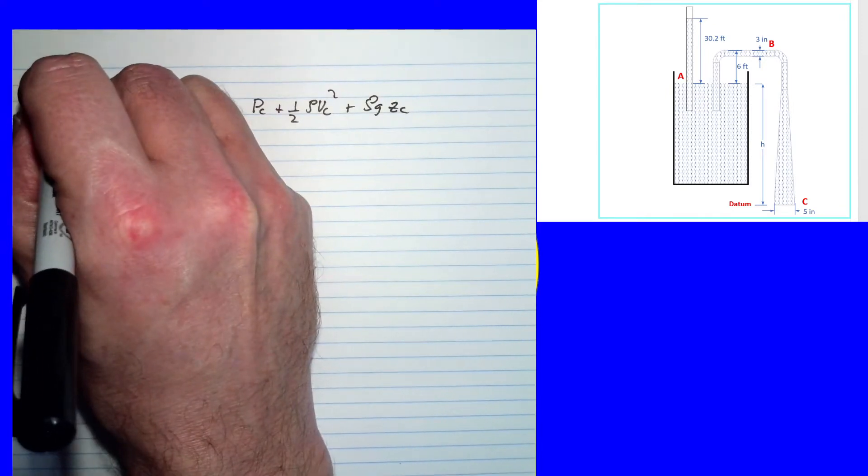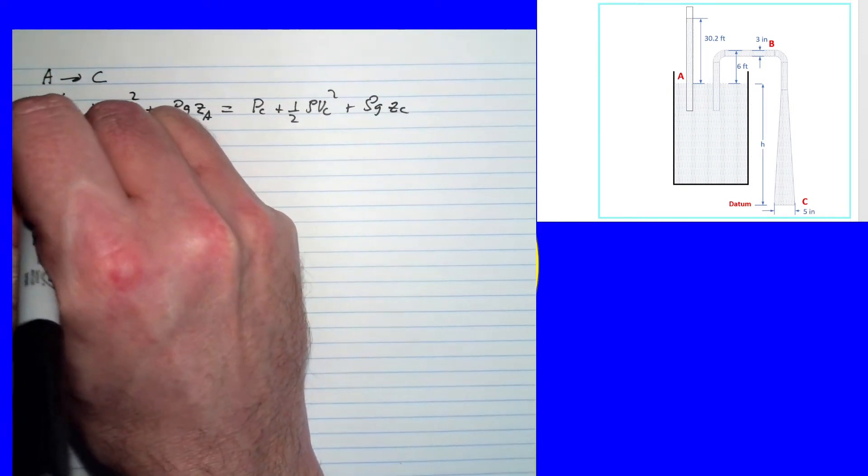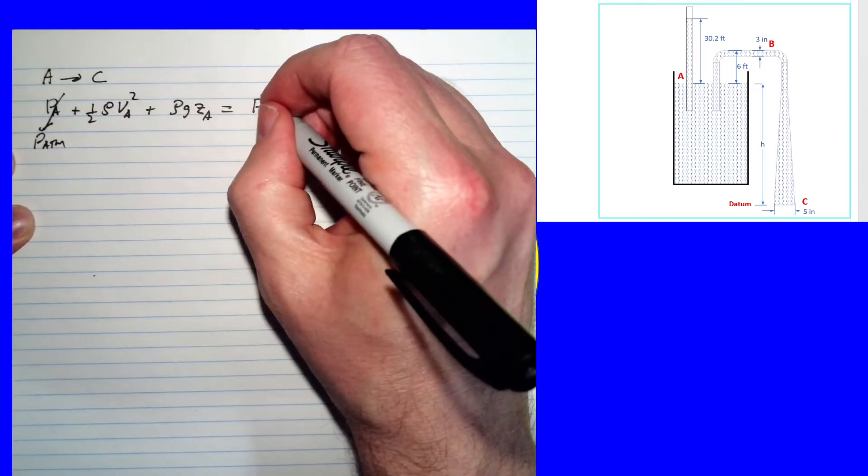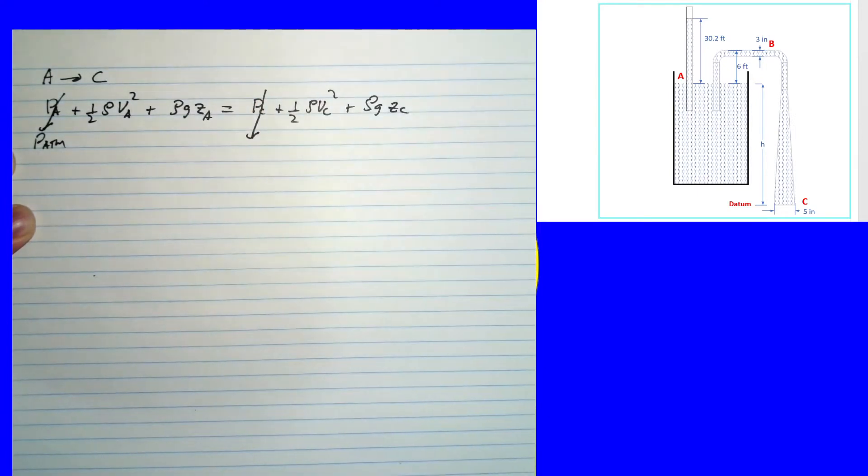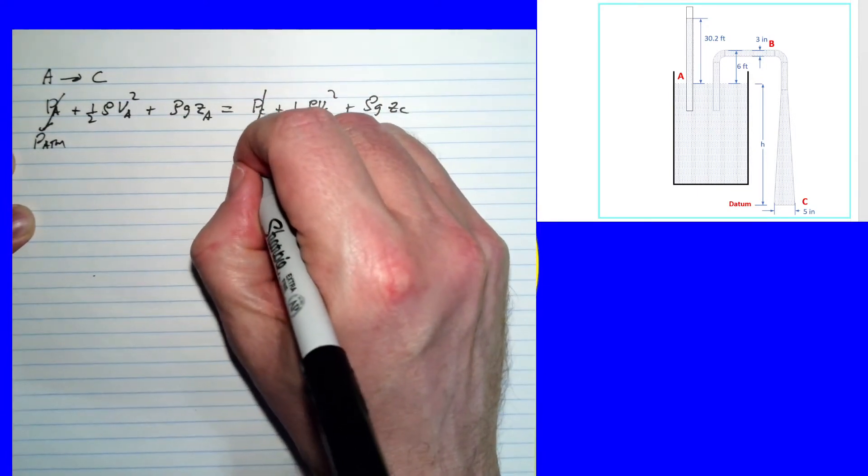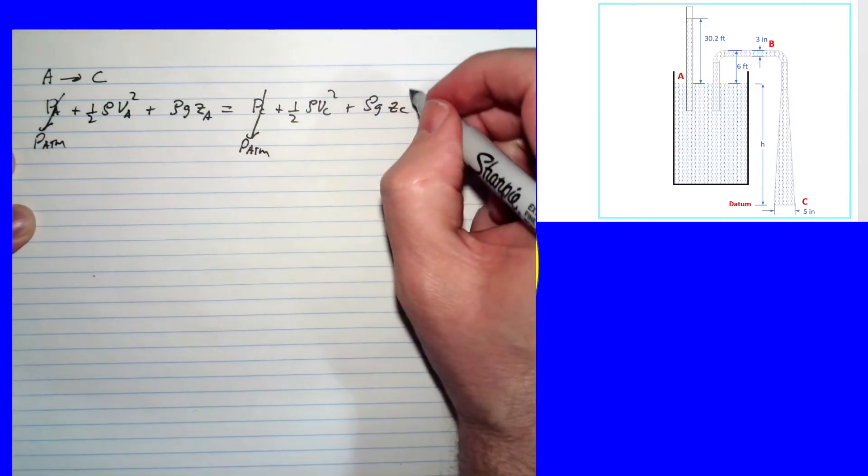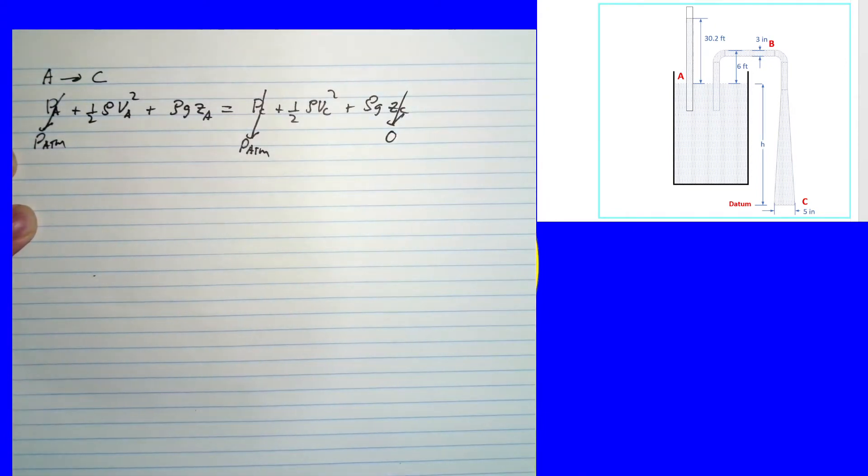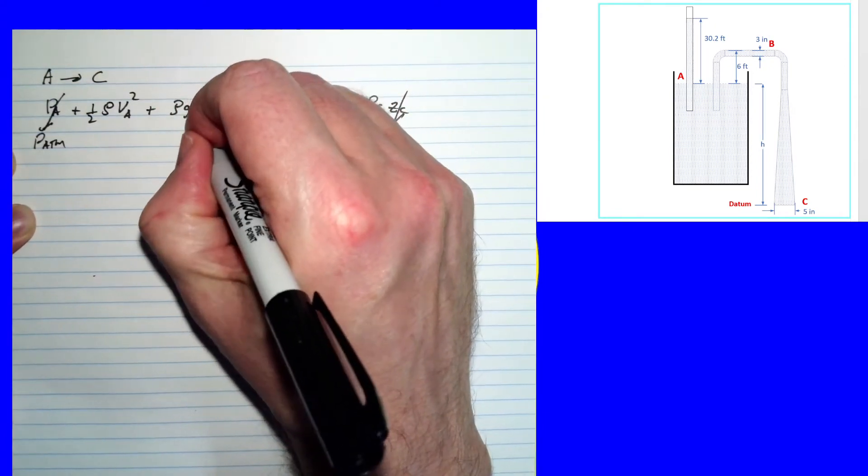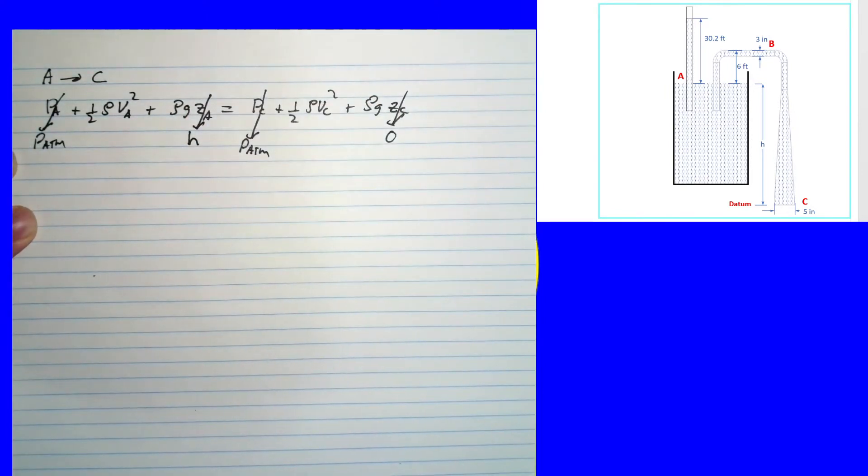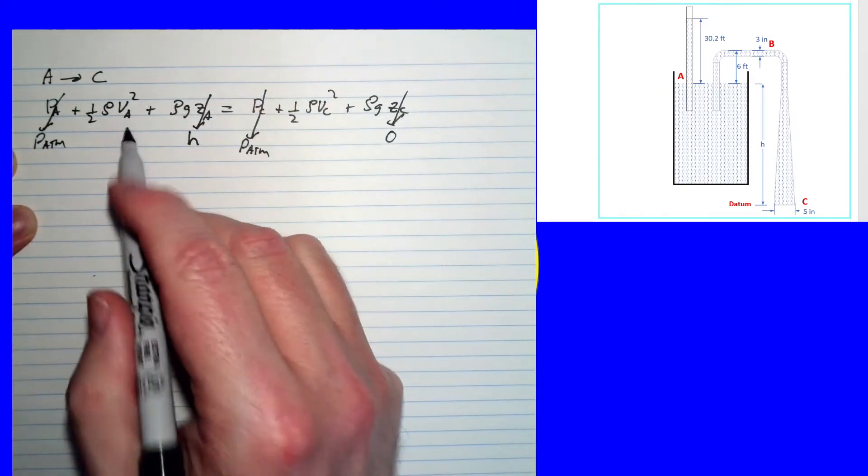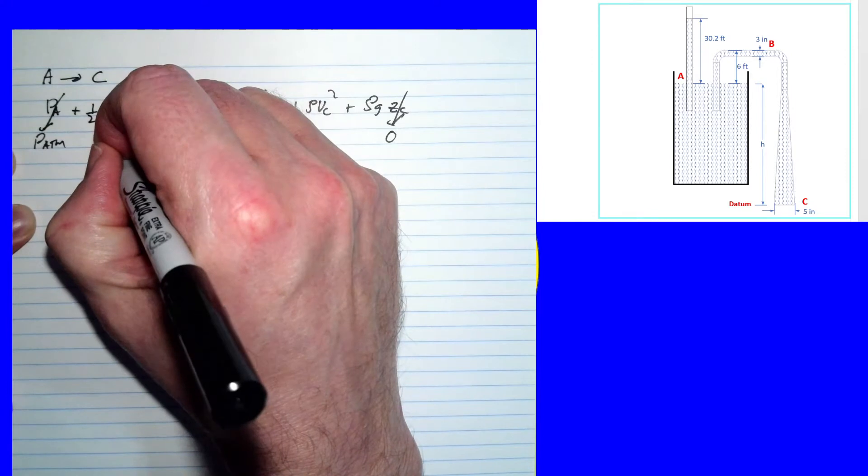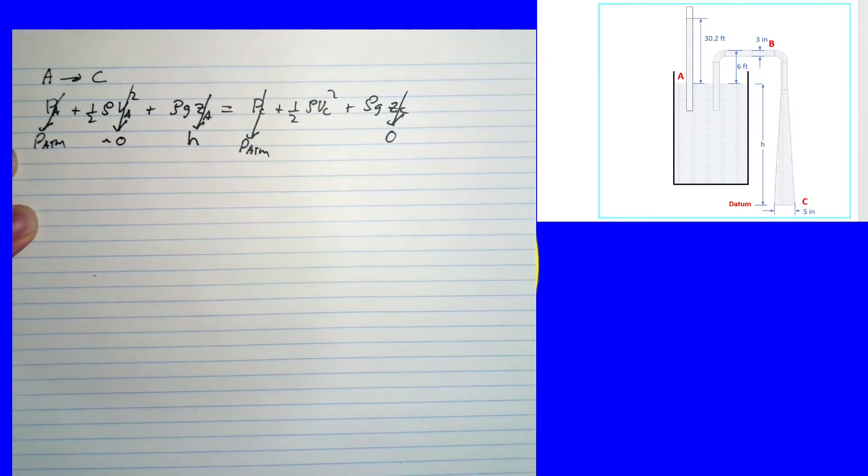What do we know? We know that the free surface of the tank is at atmospheric pressure. Similarly, the jet at the outlet of the nozzle is also at atmospheric pressure. And we defined our datum to be at point C, so the elevation at C is zero. The elevation at A is our unknown, h, so we don't want to lose that. And it's a large tank, so we're going to assume that the velocity in the tank is very, very small, negligible. And we're going to treat that as zero.